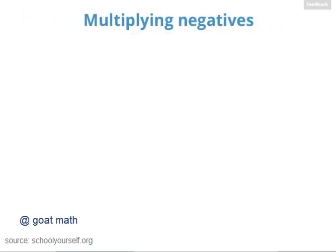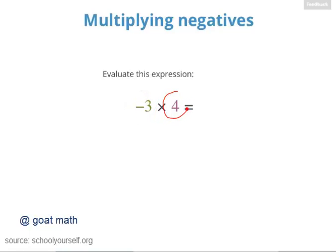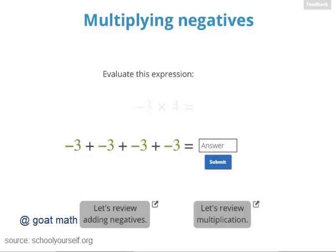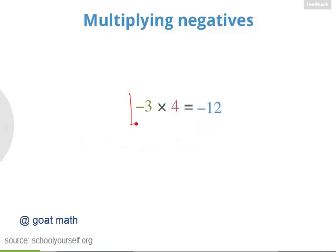Okay, it's time to discover what happens when we multiply negative numbers. Let's look at an example of multiplying a negative number, like negative 3, by a positive number, like 4. This means we're taking negative 3 and adding up 4 of them: negative 3 plus negative 3 plus negative 3 plus negative 3. This equals negative 12. So negative 3 times 4 equals negative 12.